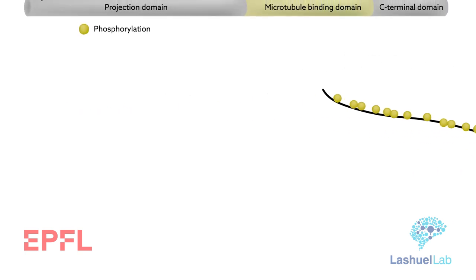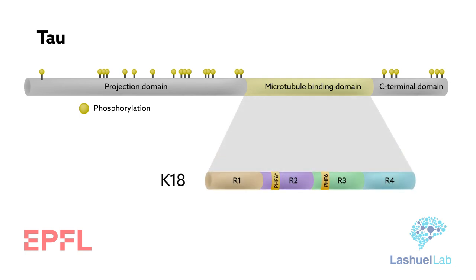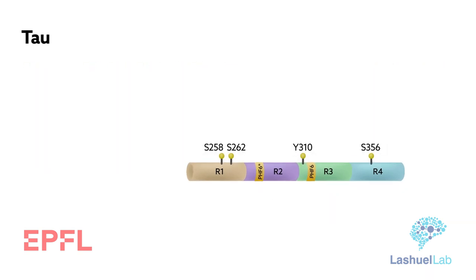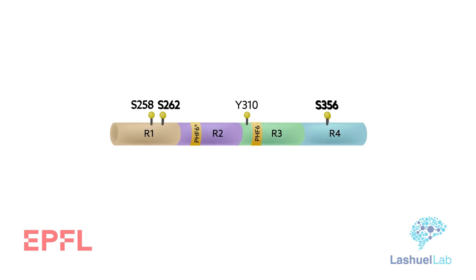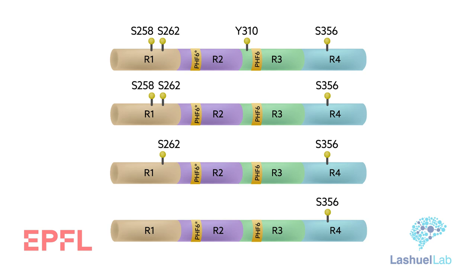The authors of the new study overcame that limitation by leveraging a chemical synthetic strategy they've recently developed. The approach uses K18 as a model for the tau protein. K18 is the fragment of the protein that contains all four repeats involved in the binding of tau to microtubules, as well as several PTM sites linked to tau aggregation and pathology formation in Alzheimer's disease. By building K18 one amino acid at a time, the team could study the effects of phosphorylation at single or multiple sites on the protein.